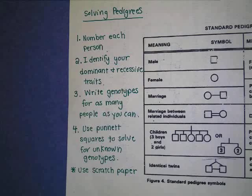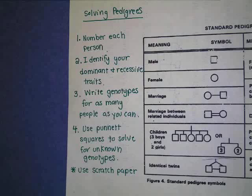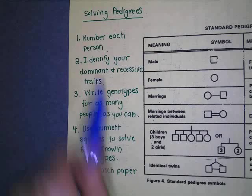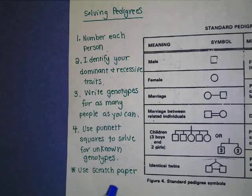Number four, you're supposed to use a Punnett square to solve for unknown genotypes, and I will show you how to do that in just a minute. You're going to be using Punnett squares anytime you don't know what someone's genotype is — you usually do two Punnett squares. Something very important that you should always do to keep your paper from getting messy is to have a scratch piece of paper out, so we can do these problems together.